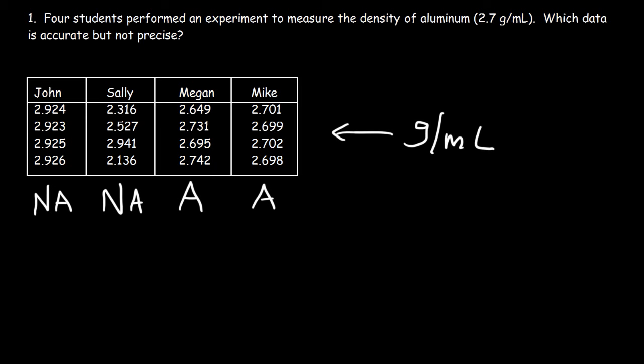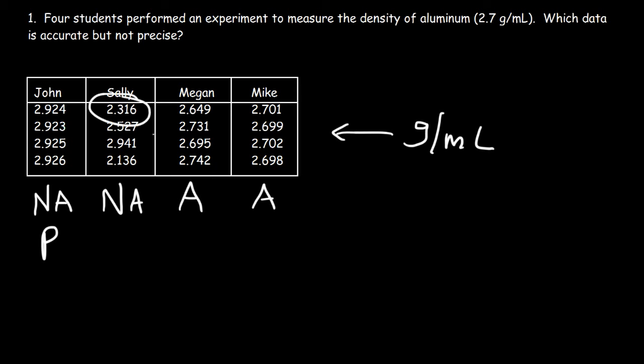Now let's look at precision. Is John's data precise — do the values agree with each other? It turns out they do: each of his trials is around 2.9, 2.924, 2.923 — those numbers are very close to each other, so John's data is precise. Sally's data, however, is not precise: her values go from 2.3 to 2.5 to 2.9, which do not agree with each other.